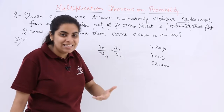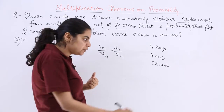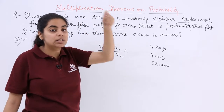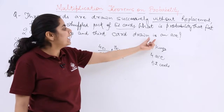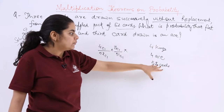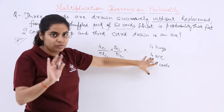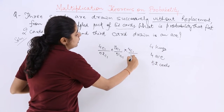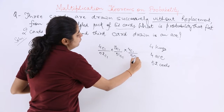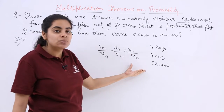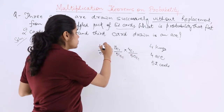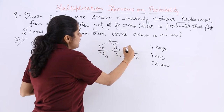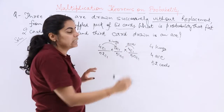For the third draw, the third card must be from the ace category. The aces are still 4, so this is 4C1 and the total is 50C1, because one card is reduced each time. These first two fractions represent the kings, and the last one represents the ace.